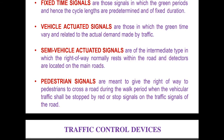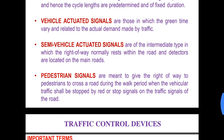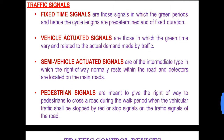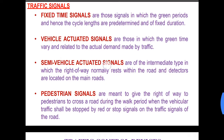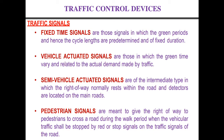Semi vehicle actuated signals are the intermediate type in which the right of way normally rests within the road and detectors are located on main roads. So this is a combination of the vehicle actuated and the fixed time signals.